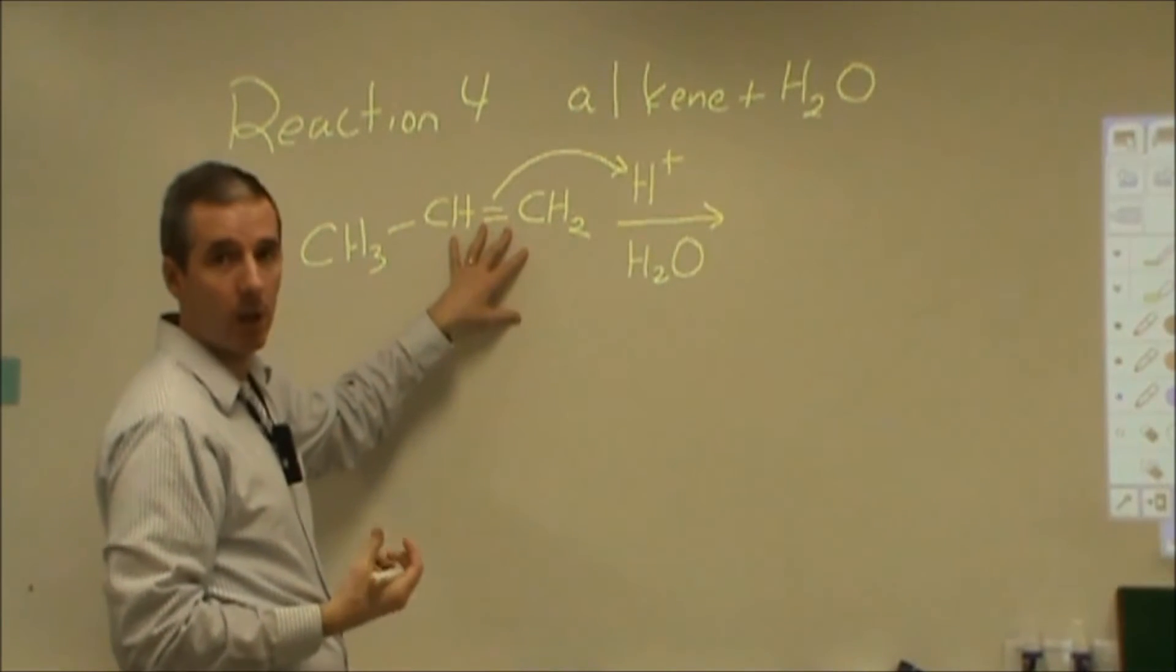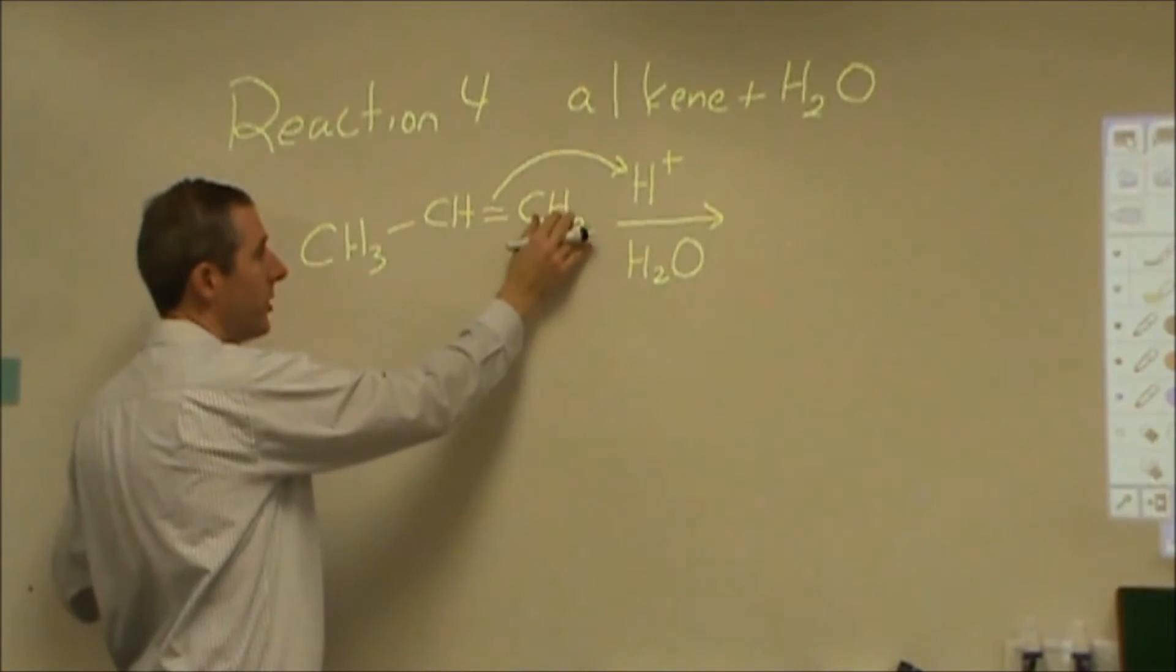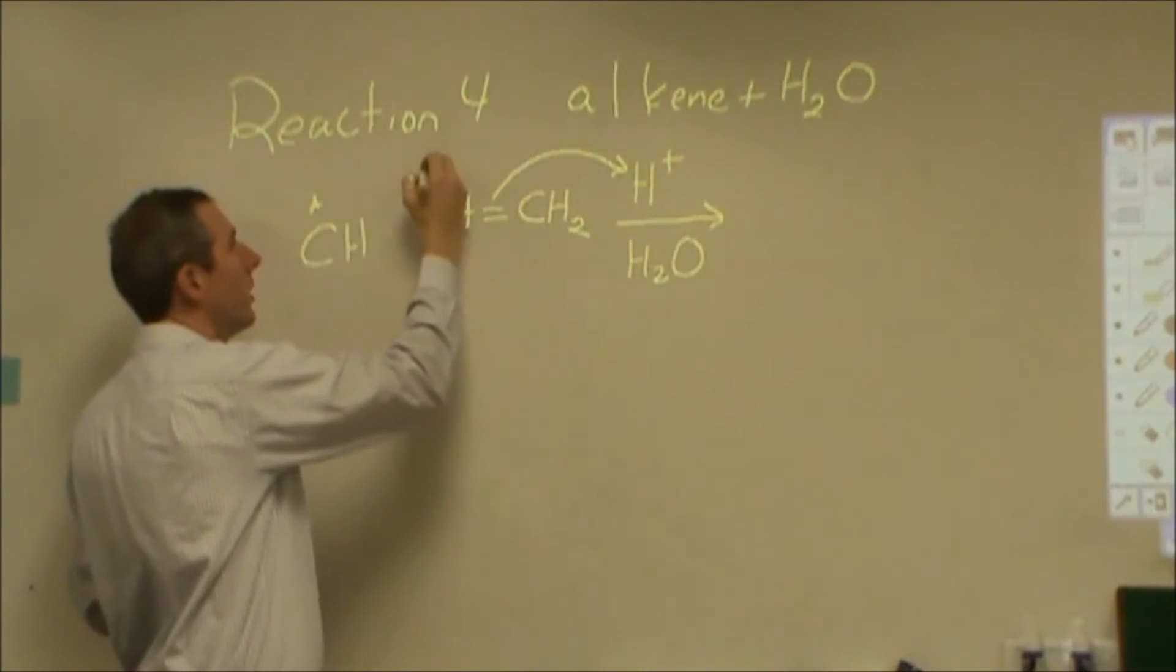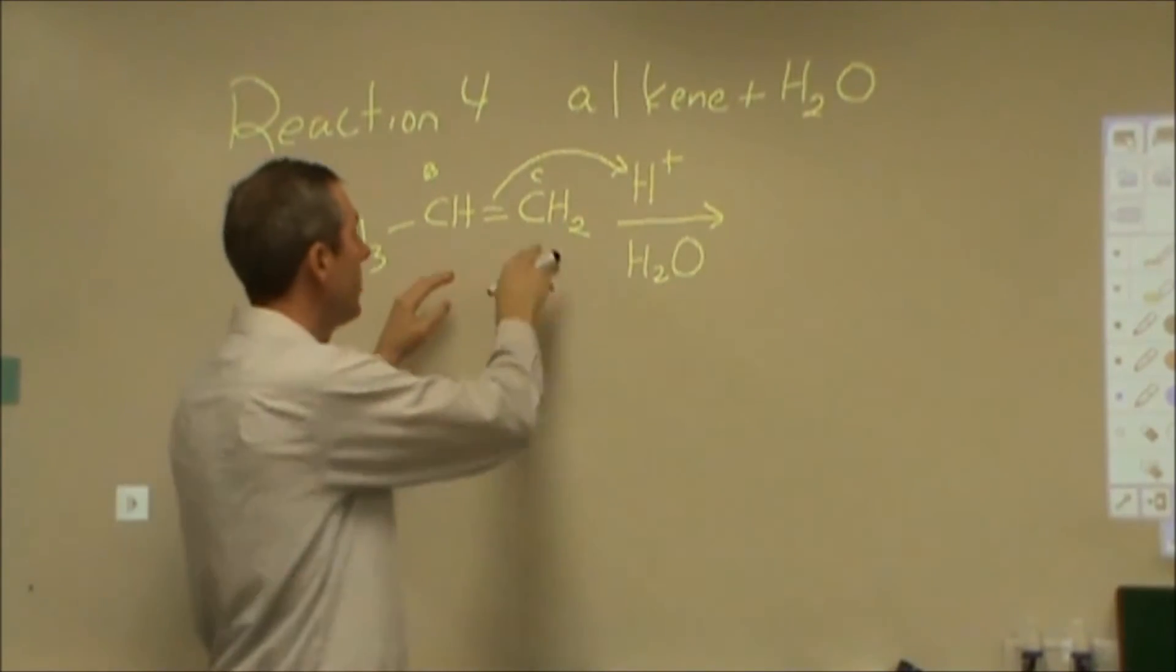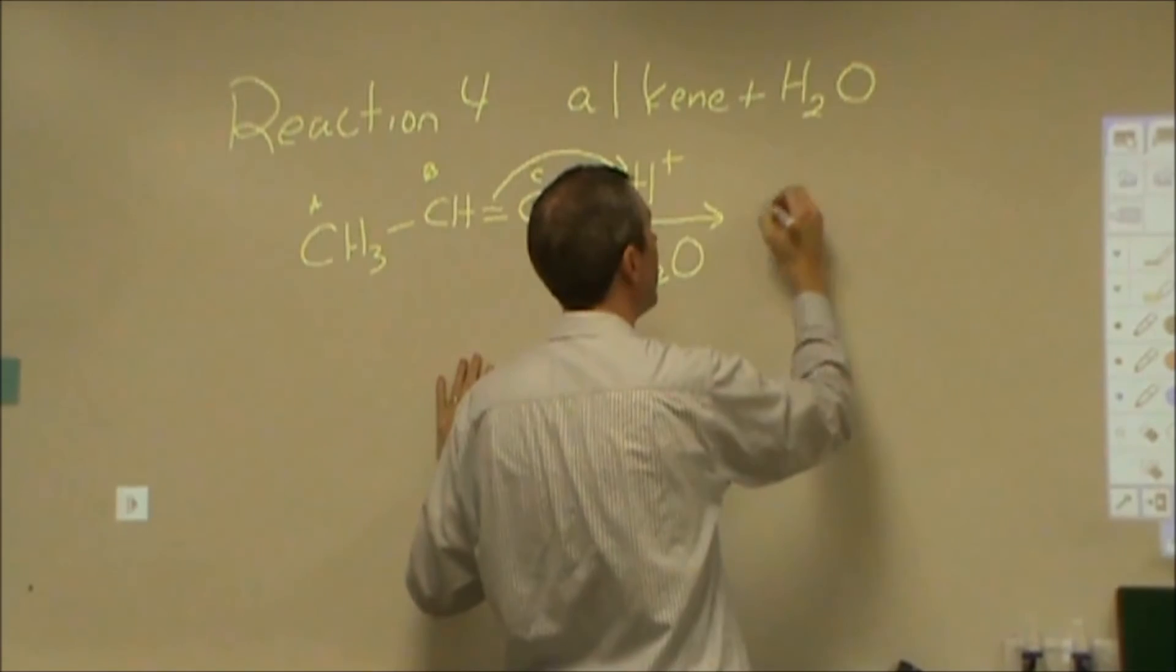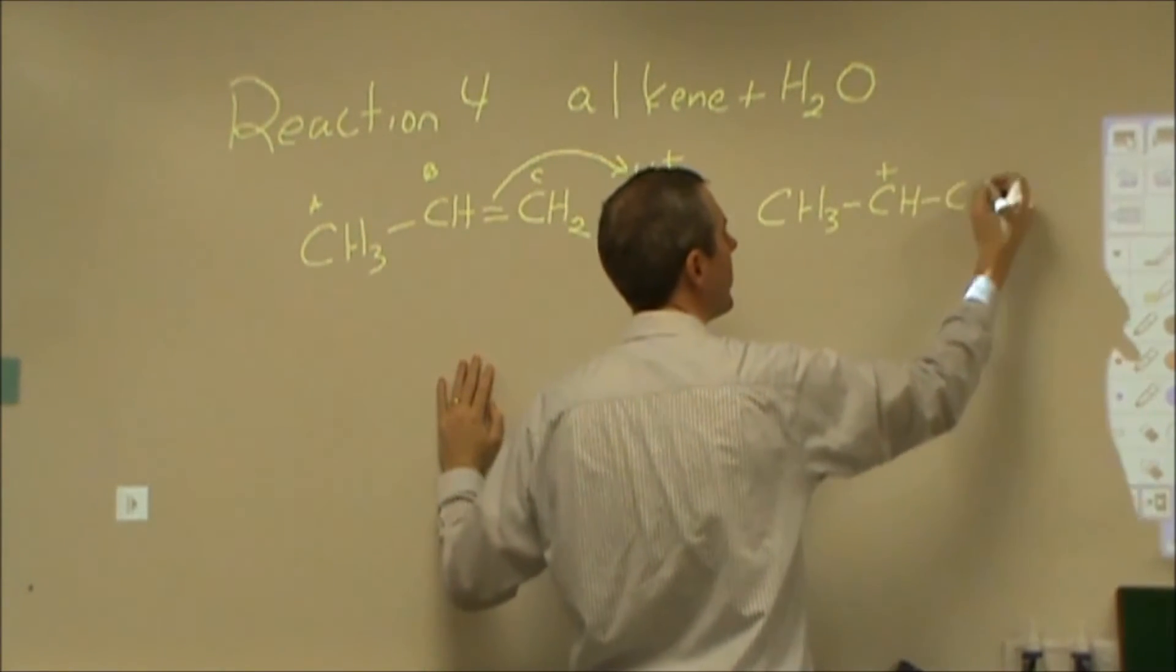What that's going to do is that's going to form a carbocation intermediate. So we can actually have that H+ go to this carbon or to this carbon. So carbon B, carbon C. So what's going to actually happen here is that H+ is going to attach to carbon C, forming a carbocation like this.